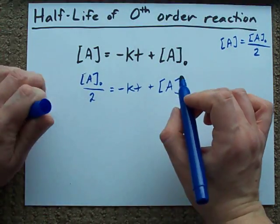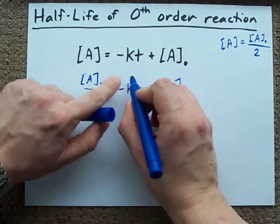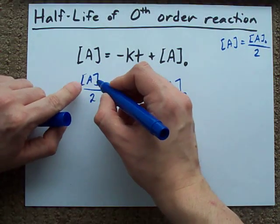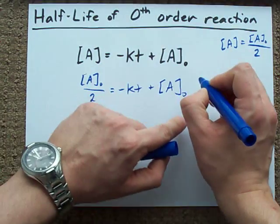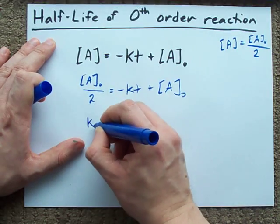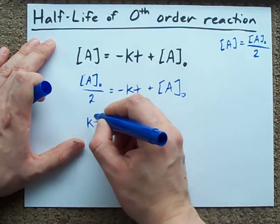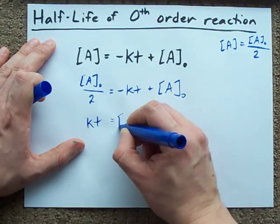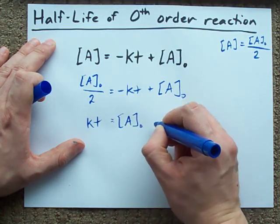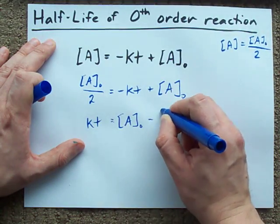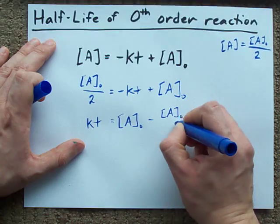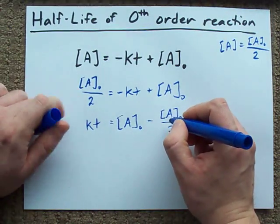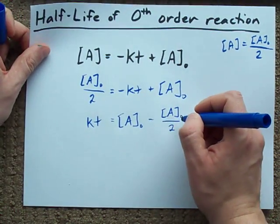What I'm going to do is move my KT to the left-hand side, and move my A-naught over two to the other side. I flip the sign on the KT because it's now on the left. I still have my A-naught on the right-hand side, and I'm subtracting away A-naught over two on the right-hand side now.